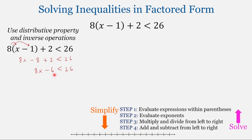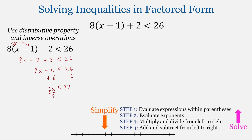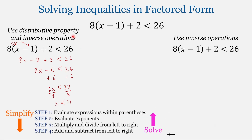We have simplified down this left side, so now we're going to solve this inequality. To solve inequalities and equations, we will typically do order of operations in reverse. We'll undo any addition or subtraction first, then undo any multiplication or division. So we'll undo the subtraction of 6 by adding 6 to both sides, giving us 8x less than 32. Then undo multiplication with division, resulting in x less than 4.